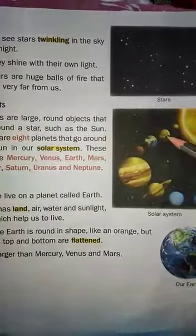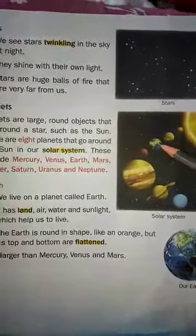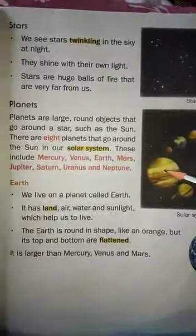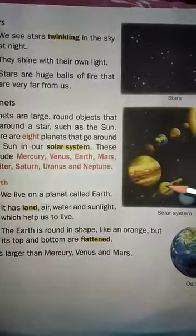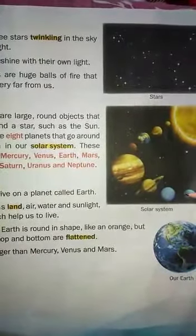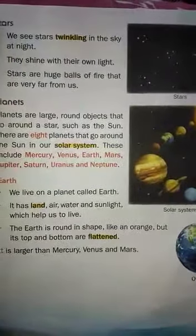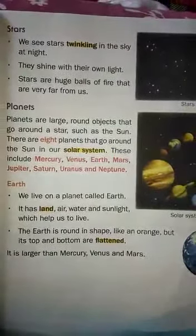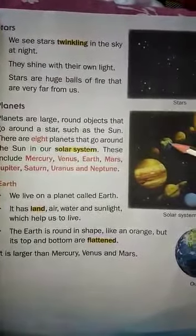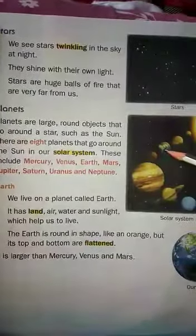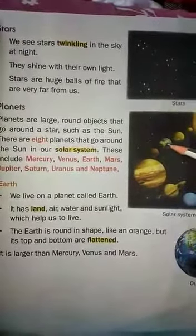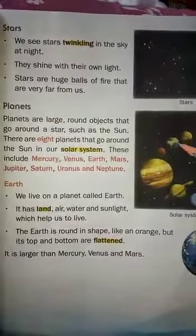The eight planets in order are: first Mercury, second Venus, third Earth, fourth Mars, fifth Jupiter, sixth Saturn, seventh Uranus, and eighth Neptune. Among these eight planets, we live on the third planet — Earth.